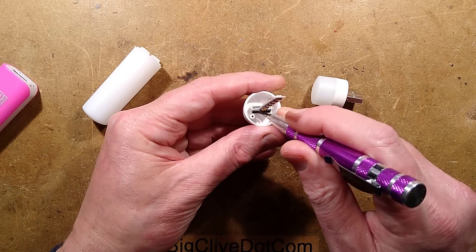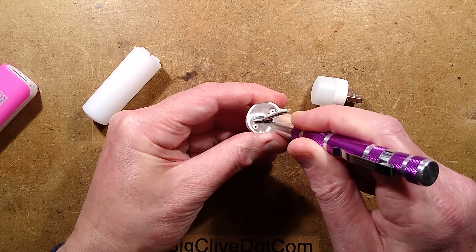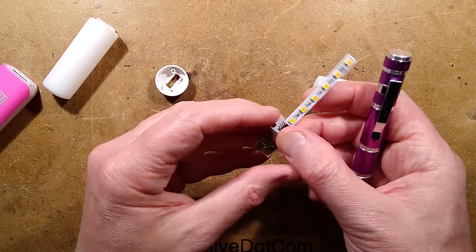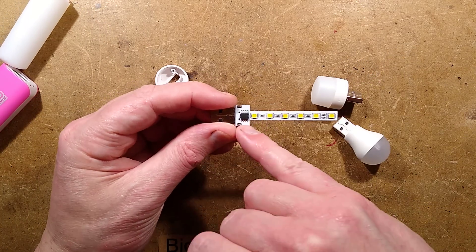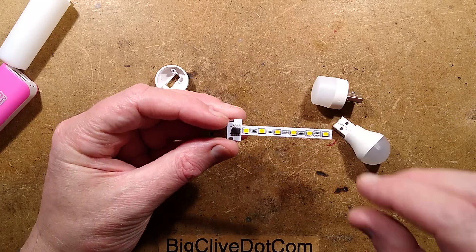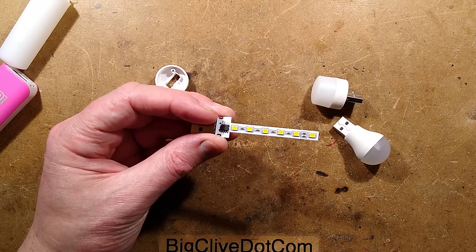That looks like a little latch in there, let's try prying that back. Oh, I don't want to snap it. It's coming out. Yeah, 8 pin chip. Oh, a little capacitor across the chip. I shall take a picture and we can explore.